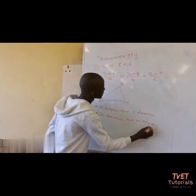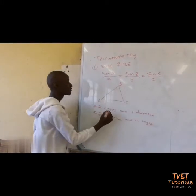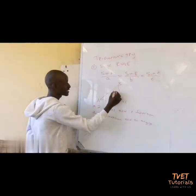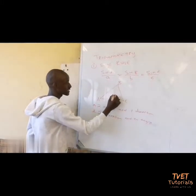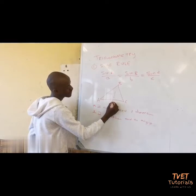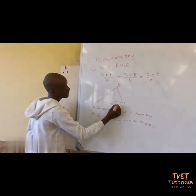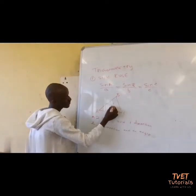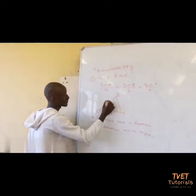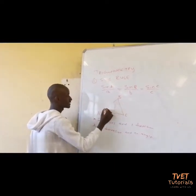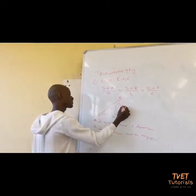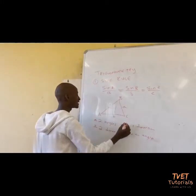Coming to this formula: angle B here is opposite to a side, so you are going to have small b. And C is opposite to this side, so you are going to have small c. A is opposite to this side, so you are going to have small a.